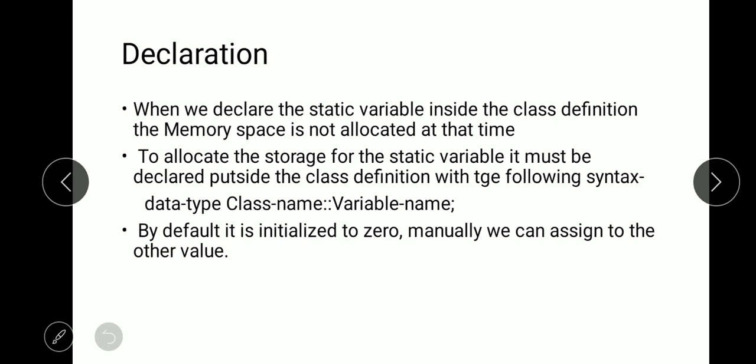In object oriented programming, whenever we declare a static variable inside the class definition, memory space is not allocated to that variable at that time. To allocate memory space to the static variable, we have to declare it with a separate syntax outside the class definition. The syntax is: data type, then class name, double colon, and the static variable name. By default the static variable is initialized to zero, but we can also manually assign any other value.